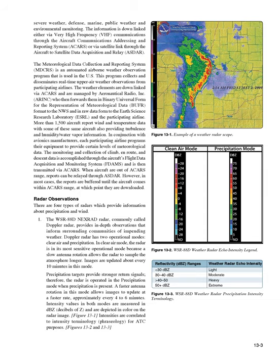Pilot reports are easily decoded, and most contractions used in the reports are self-explanatory. Example: UA /OV GGG 090025 /TM 1450 /FL060 /TP C182 /SK 0800 OVC /WX FE 04SM RA /TA 05 /WV 27030KT /TB LGT /RM HVY RAIN. Explanation: Routine pilot report, location 25 nautical miles out on the 090-degree radial, Gregg County VOR; time 1450 Zulu; altitude 6,000 feet; aircraft type Cessna 182; sky cover 8,000 overcast; visibility/weather 4 miles and rain; temperature 5°C; wind 270 degrees at 30 knots; turbulence light; icing none reported; remarks: rain is heavy.